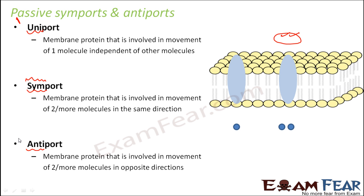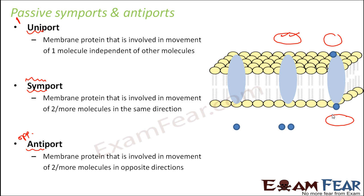The third type is antiport — anti means opposite. This is the type of membrane protein involved in movement of two or more molecules in opposite directions. Two particles at a time should move in opposite directions for the protein to allow their movement. These are the three types of membrane transport proteins involved in facilitated diffusion: uniport, symport, and antiport.